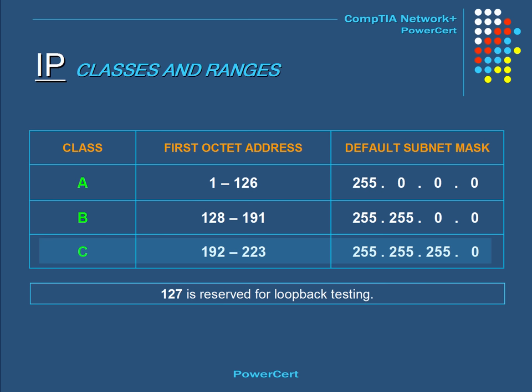You also need to memorize the default subnet masks for each class. The 127 range is skipped because the 127 address is reserved for internal loopback functions and cannot be used for a network.